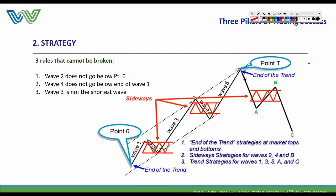Wave 4 is a pretty extended pullback — draw your channel lines so that you have the entire five-wave sequence within those lines. On the corrective side, this is called a zigzag: A, B, C. My favorite Elliott Wave pattern is a three-wave sequence — either A, B, C or 1, 2, 3. That is my absolute favorite trade: the beginning of a move or the end of the move.